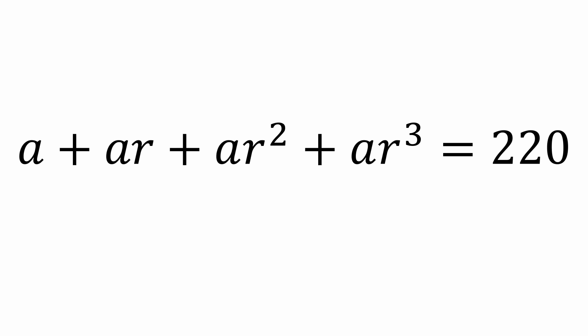But one equation with two unknowns isn't going to get us very far. We need the other clue to the problem. The difference between the third term and the first term is 44, so we can write a times r squared minus a equals 44. Nice. Two equations with two unknowns.